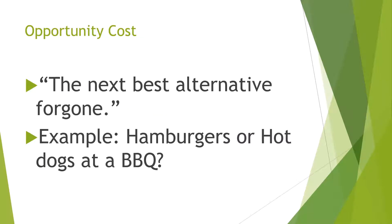The first term we're going to cover today is opportunity cost, and this just means the next best alternative forgone. For example, if you're at a barbecue and you have to decide between hamburgers or hot dogs, let's say you get hamburgers — the opportunity cost of getting hamburgers would be the hot dogs, because that would be the next best alternative, and the same thing vice versa.